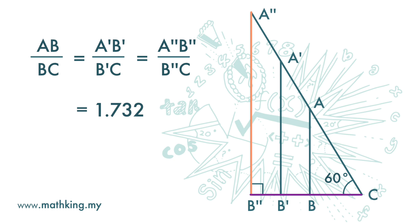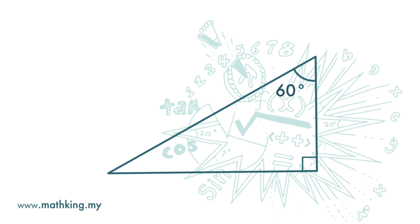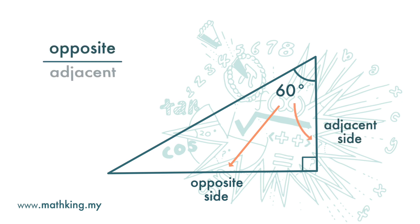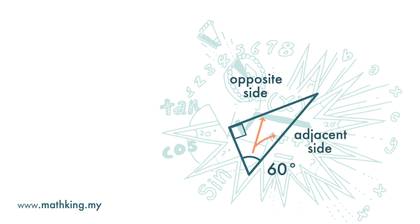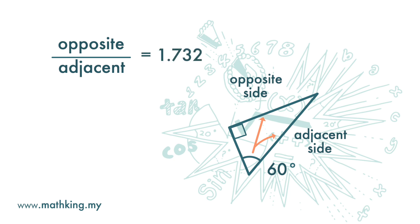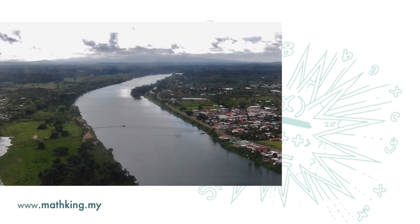We can verify this by actually measuring the length of the sides and getting the ratio. So for this triangle, the ratio of the length of the opposite side to the length of the adjacent side is 1.732. And for this one, the ratio of the length of the opposite side to the length of the adjacent side is also 1.732.